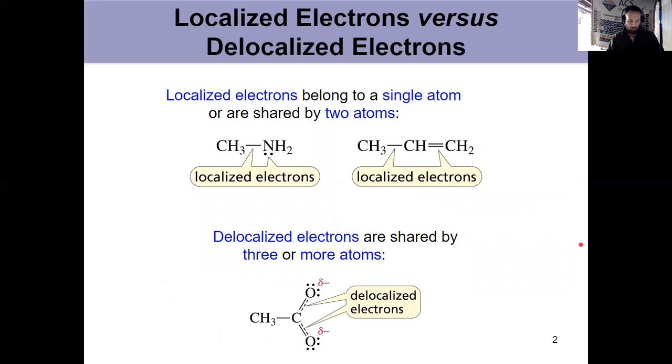So to refresh our memory from Chapter 2, what's the difference between localized electrons and delocalized electrons? If electrons are localized, they either belong to a single atom or exist in a single bond that's shared between two atoms. So we see examples of localized electrons, a sigma bond, a lone pair, could be a pi bond, but that just exists in one place.